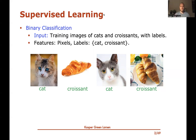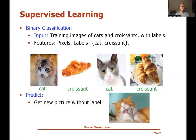The training data consists of images where the features are the pixels and the labels are either 'cat' or 'croissant.' We know the labels for this training data. The goal is to use it to make predictions on new data — given a new picture where we don't know the label, we have to predict whether it corresponds to a cat or a croissant.